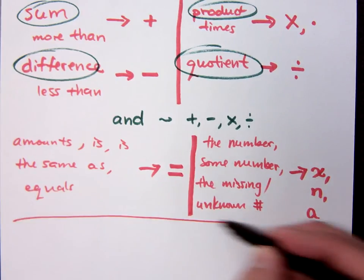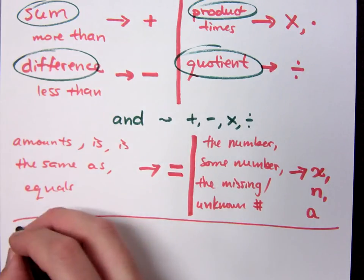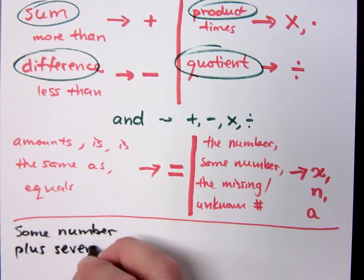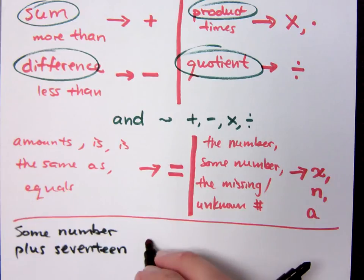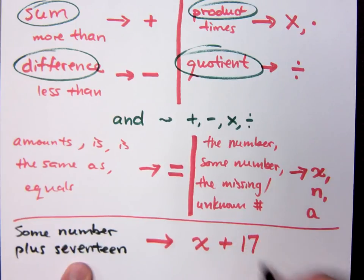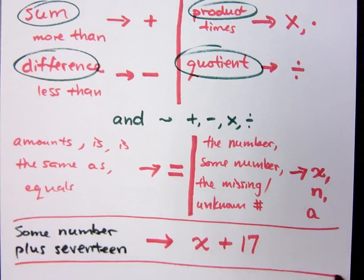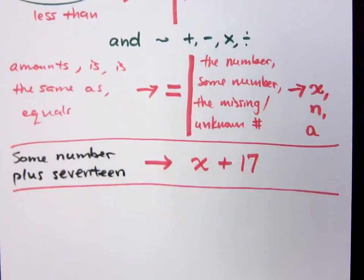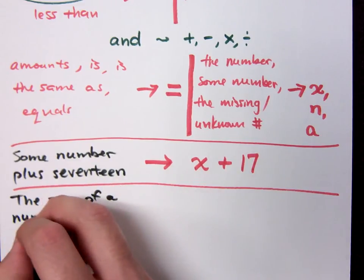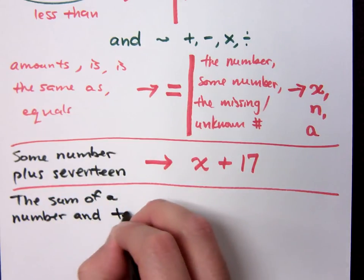What we're going to do now is I'm going to write some sentences or phrases for you, and your job will be to translate them into the algebraic expression — going from words to the expression. So if I say 'some number plus 17,' what's the easiest way to translate that as an algebraic expression? Some number is represented by x, so it's x plus 17. The sum of a number and 10.